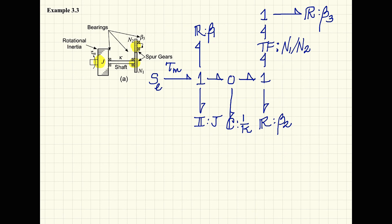Last, I have only one simplification to make, and that simplification arises due to the fact that I have this one junction with only two bonds. So in essence, what I can do is I can place this R element directly off the transformer.